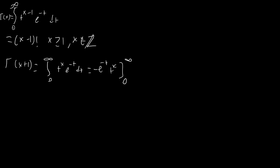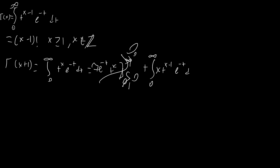At infinity, exponentials decay much more quickly than polynomials — you can verify this using L'Hôpital's rule repeatedly — so this goes to zero. And at zero, t to the x is just zero, so the boundary term is overall zero. Then, because of the negative sign, we end up adding the integral from zero to infinity of x times t to the x minus 1, e to the negative t, dt. We can bring x outside since it's not dependent on t, so gamma of x plus 1 equals x times gamma of x.